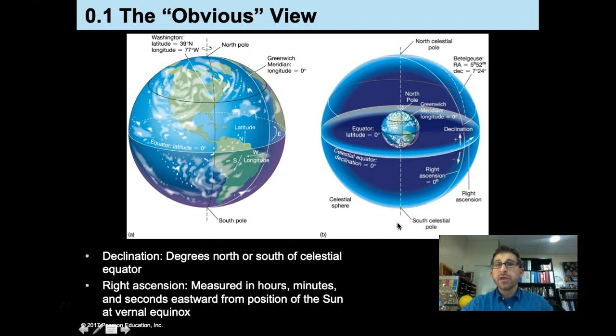And we also have things called right ascension, which are similar to our lines of longitude. And then we have declination that are similar to our lines of latitude. Now, one way to remember this, for me at least, is